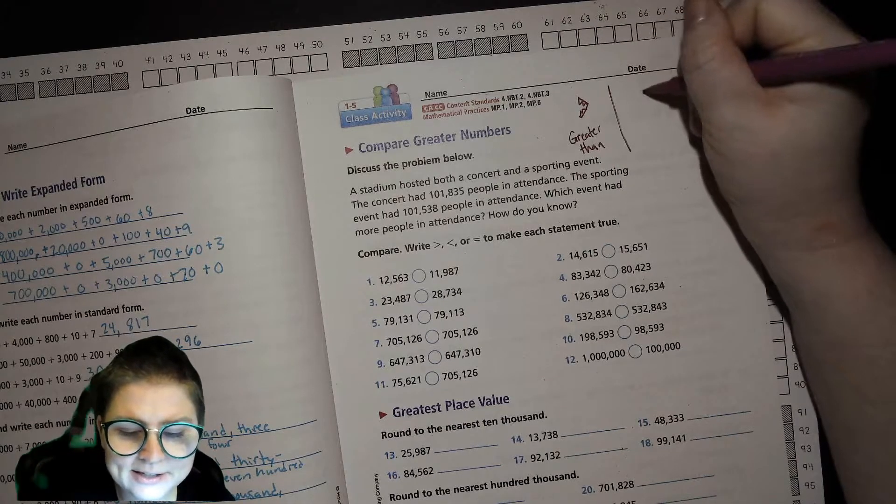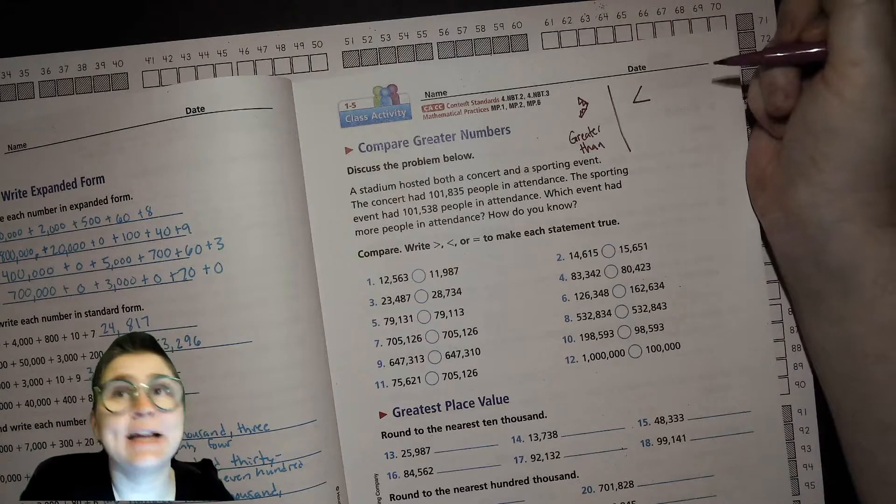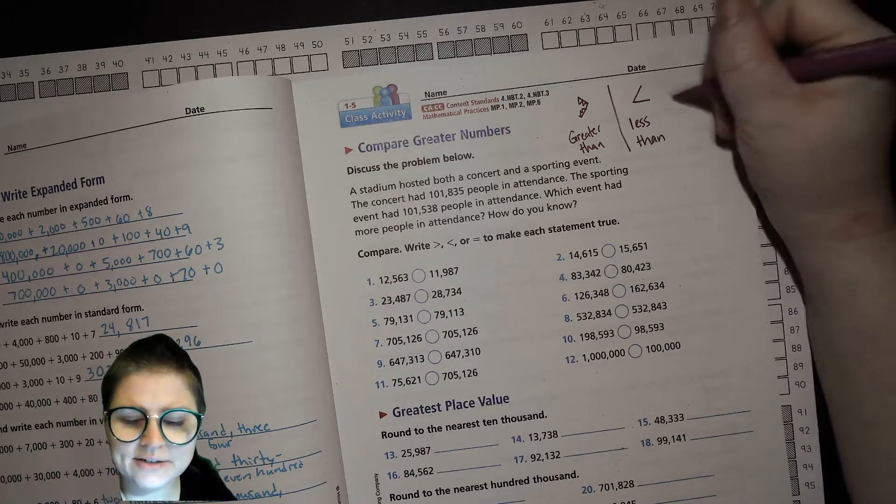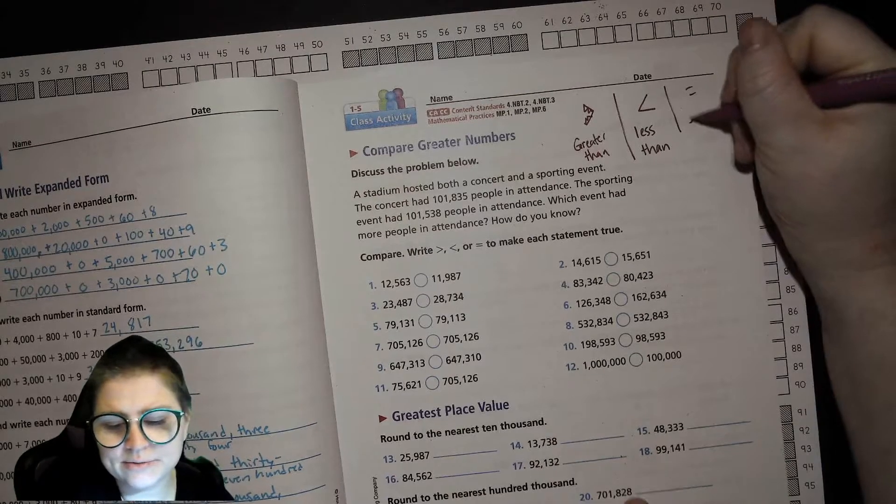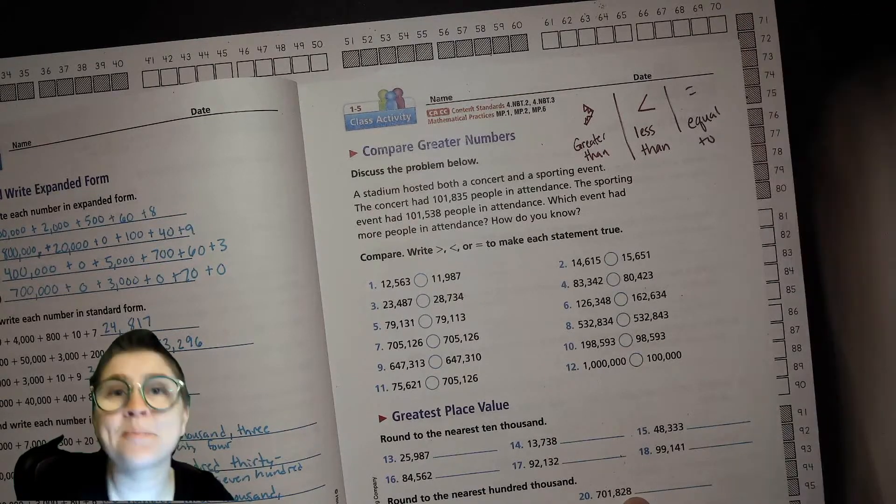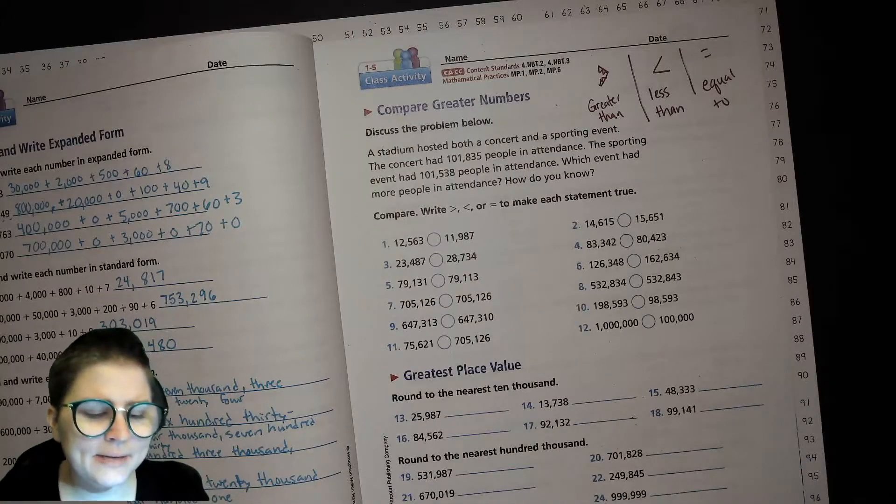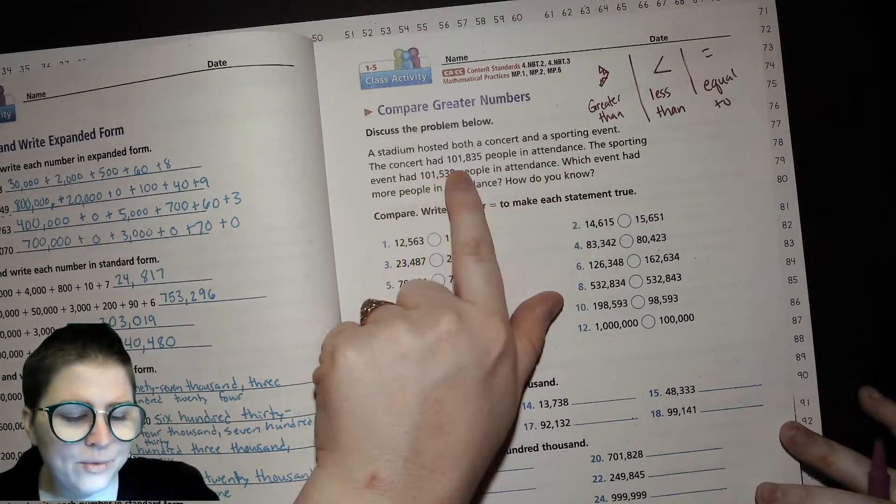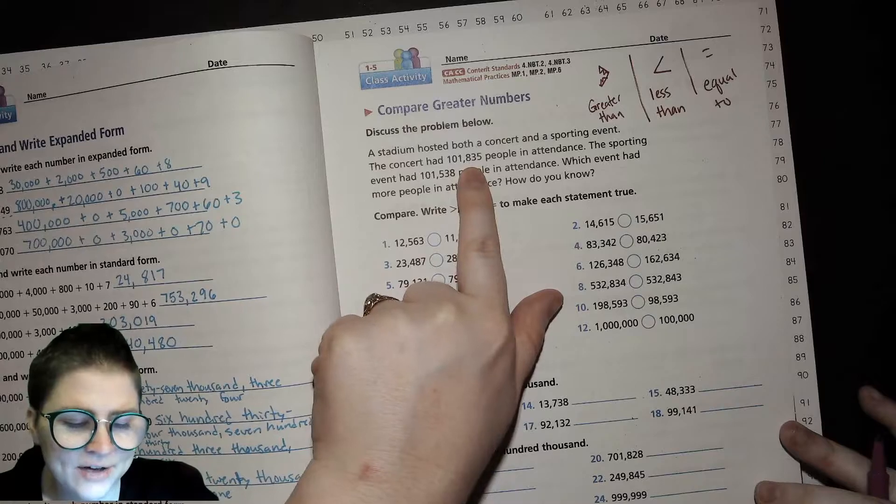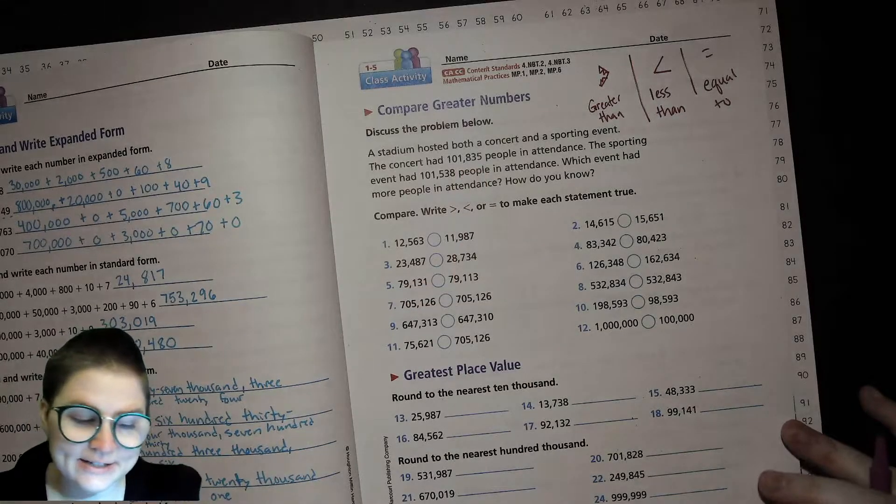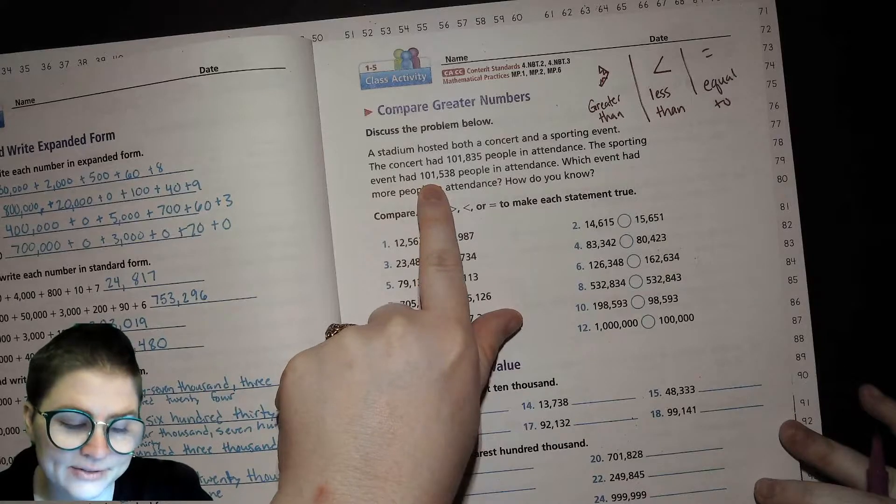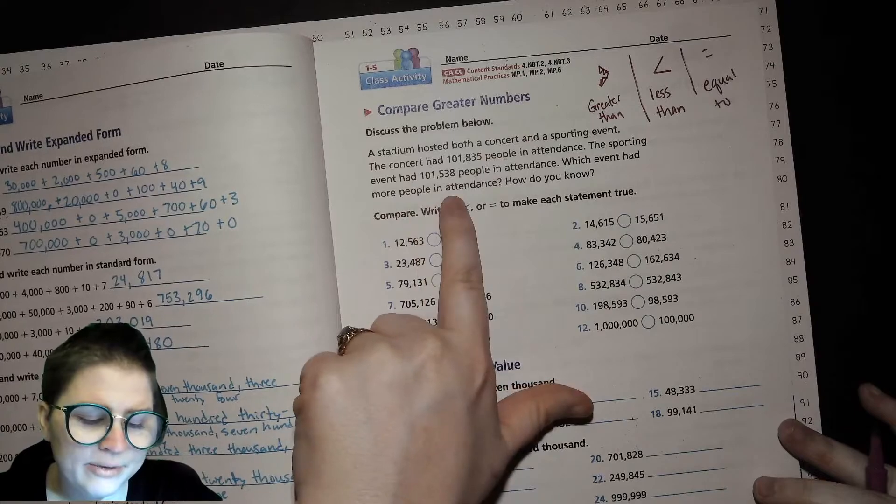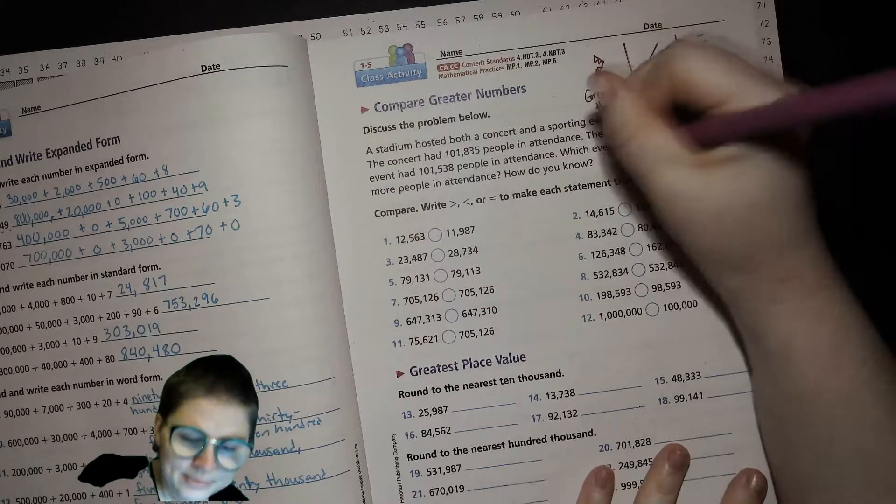You'll read this one that I think kind of looks like an L, right? That's less than. And then, of course, this is equal to. Alright, so, a stadium hosted both a concert and a sporting event. The concert had 101,835 people in attendance. Which event had more people in attendance? How do you know?